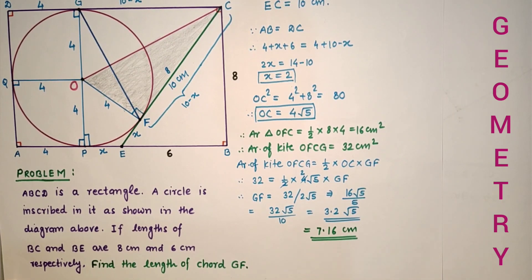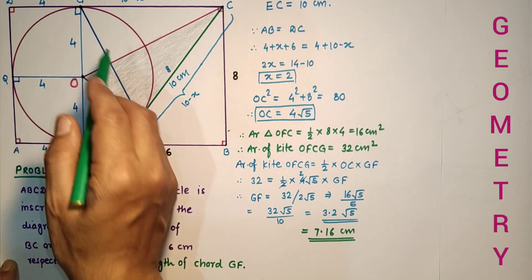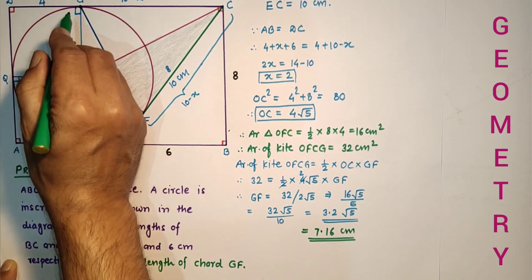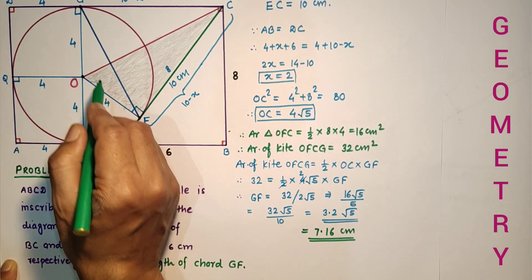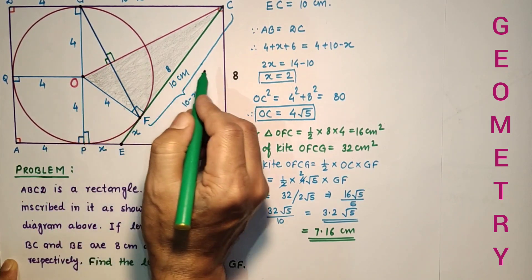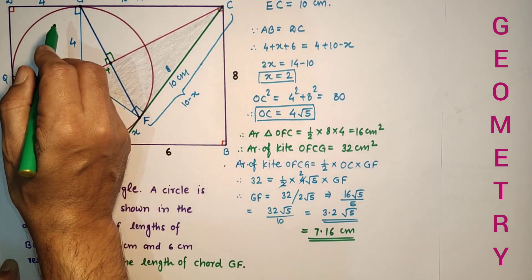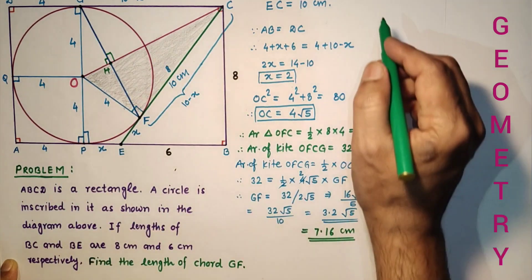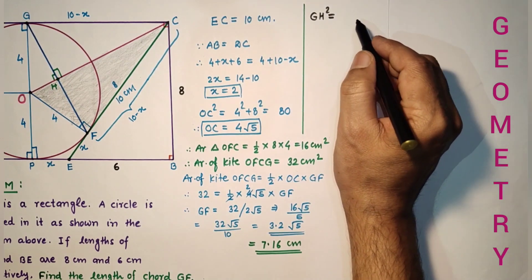We have another method. Since the two triangles are congruent, the corresponding angles are equal, so the chord GF is bisected at right angles. Let point H be the midpoint. We can use GH² equals OH times HC.